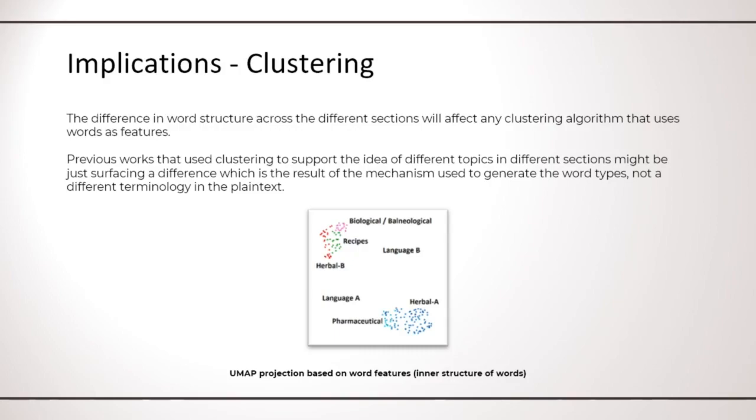As an example, I show here a projection obtained by using structural features of words, the same I've shown previously and that I used to create the decision tree. Each dot is a page in the Voynich and the colors represent the section to which the page belongs. You can clearly see how this clustering, which is based on structural feature, replicates the results of clustering based on words.